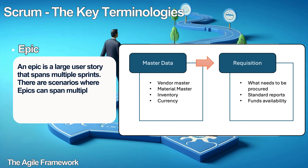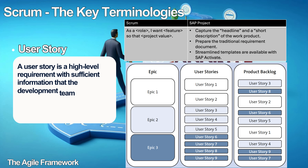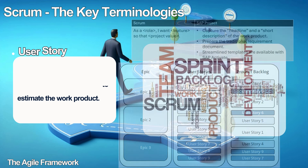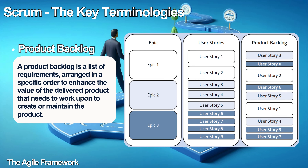There are scenarios where Epics can span multiple Scrum teams. An Epic can generally come from a client or arise due to system requirements. A user story, on the other hand, is a high-level requirement with sufficient information that the development team can use to estimate the work product. Per Scrum, the user story has a role, a feature, and a benefit. In SAP, we capture the headline and a short description of the work product, and also prepare traditional requirement documents and streamlined templates. A product backlog is a list of requirements, also known as user stories, arranged in a specific order to enhance the value of the delivered product. It is managed by the product owner, and there can be only one product backlog for a product.